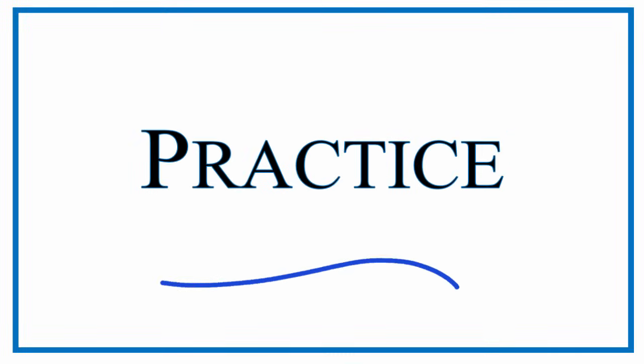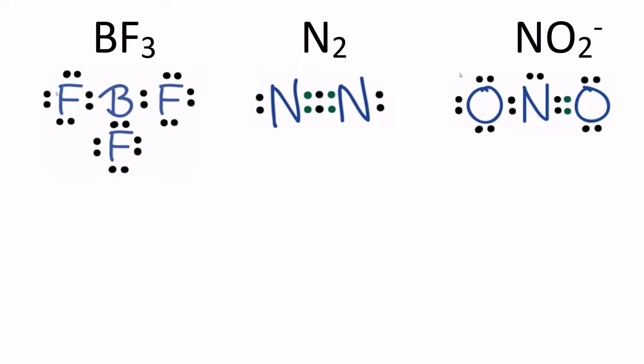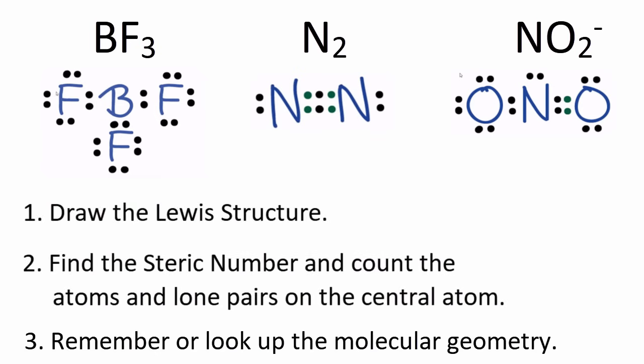Before we move on, let's lock this into our minds with some practice. First, we'll draw the Lewis structures — I've done that to speed things along. At this point, you'll want to try to visualize what these structures might look like in three dimensions as those atoms spread out and push away from each other. Then find the steric number, count all the atoms and lone pairs on the central atom, and remember or look up the molecular geometry. Pause and give these a try.